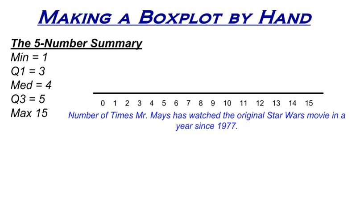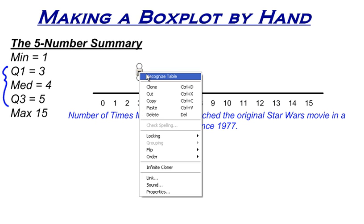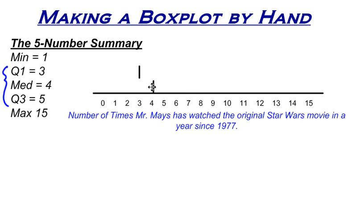I want to start with these three: the first quartile, the median, and the third quartile. I create three short vertical lines above the number line — don't put the box plot right on the number line, it's difficult to read, especially if you're comparing multiple box plots. Put it above the number line. My first quartile is at 3, so I put a vertical line there. My median is at 4, so I put a line there. And my third quartile is at 5, so I put one there as well.